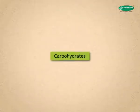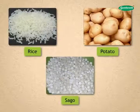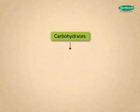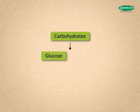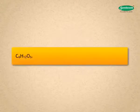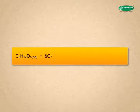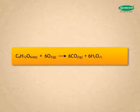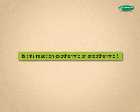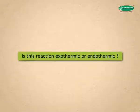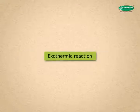Students, we know that carbohydrates such as rice, potato, sago, etc. are major sources of energy in our diet. During digestion, these carbohydrates are broken down into glucose. Glucose combines with oxygen in our body and provides energy. C₆H₁₂O₆(aq) + 6O₂(g) → 6CO₂(g) + 6H₂O(l) + energy. Is this reaction exothermic or endothermic? This reaction is exothermic.